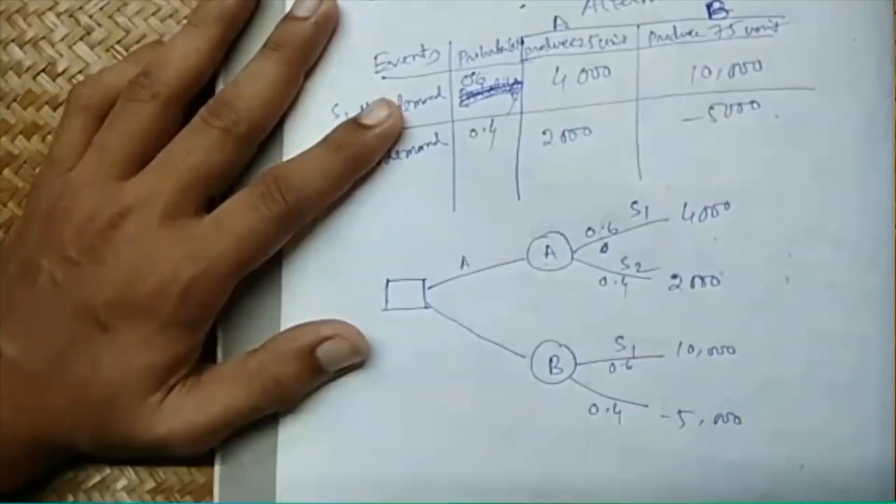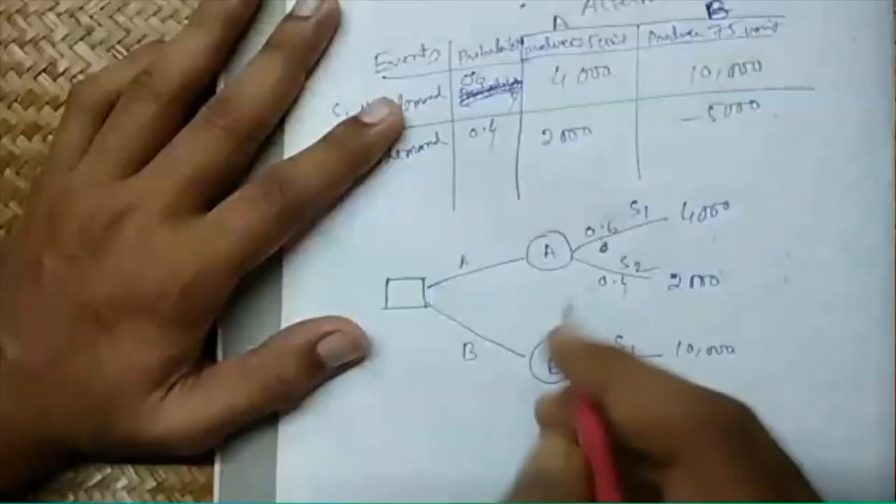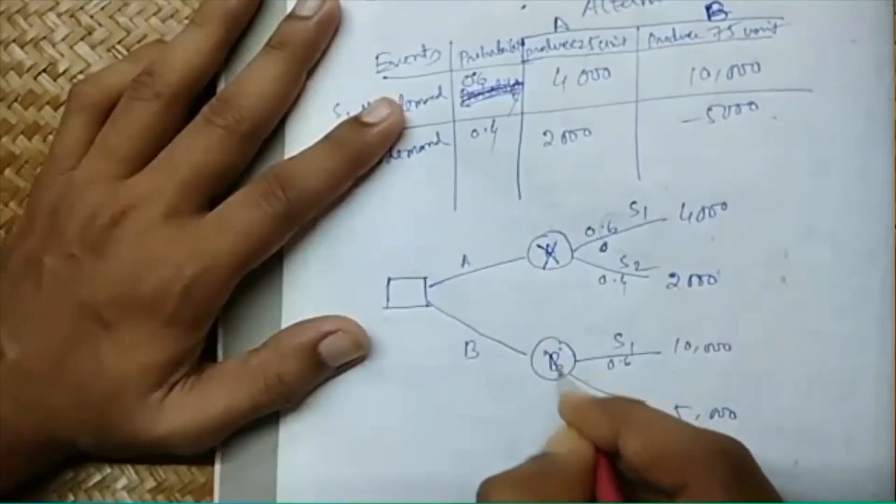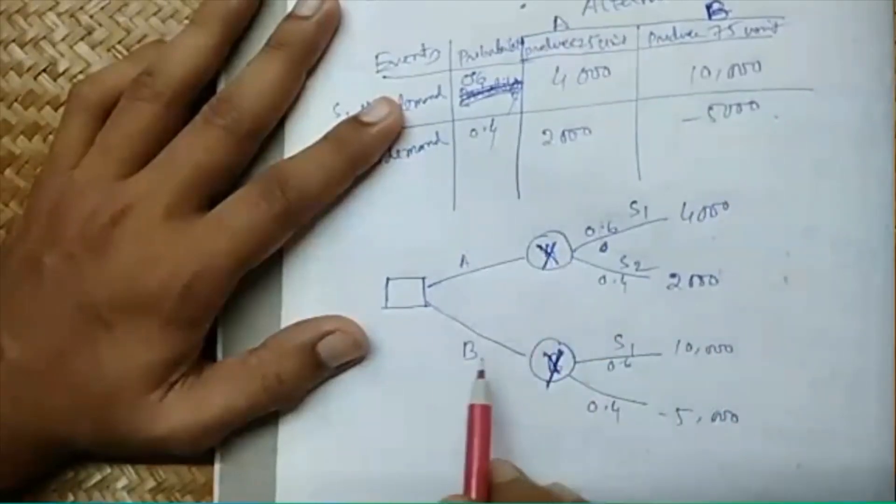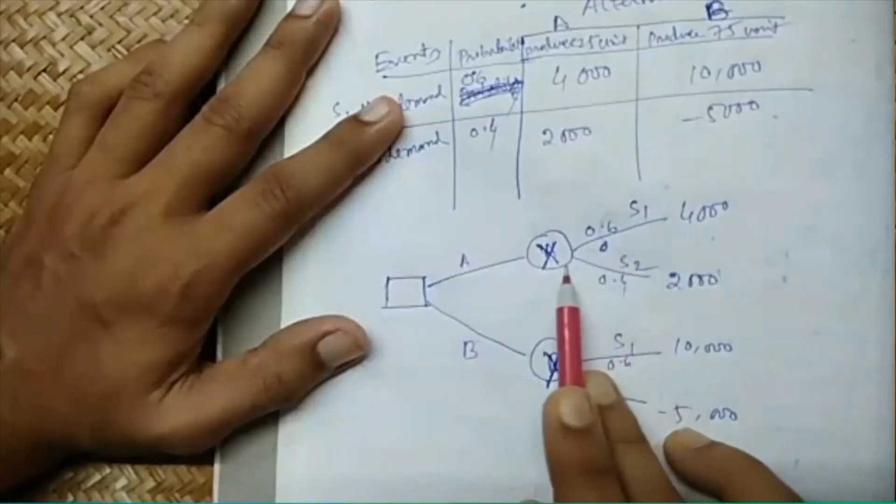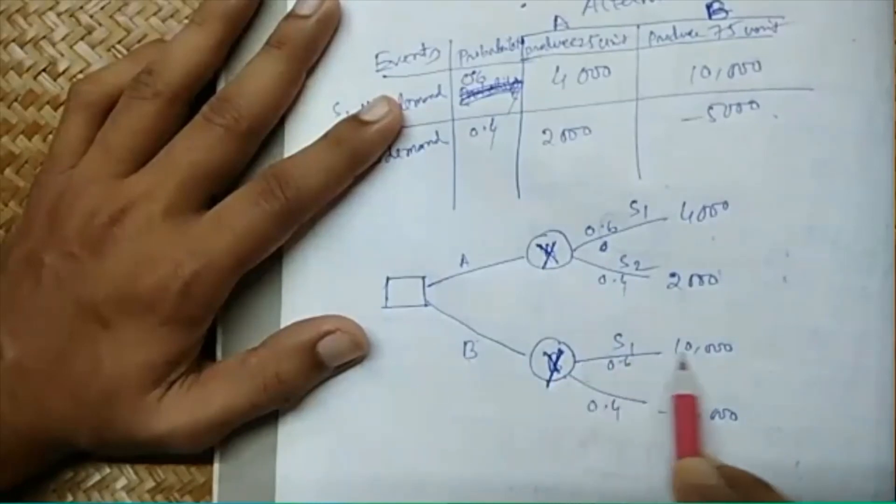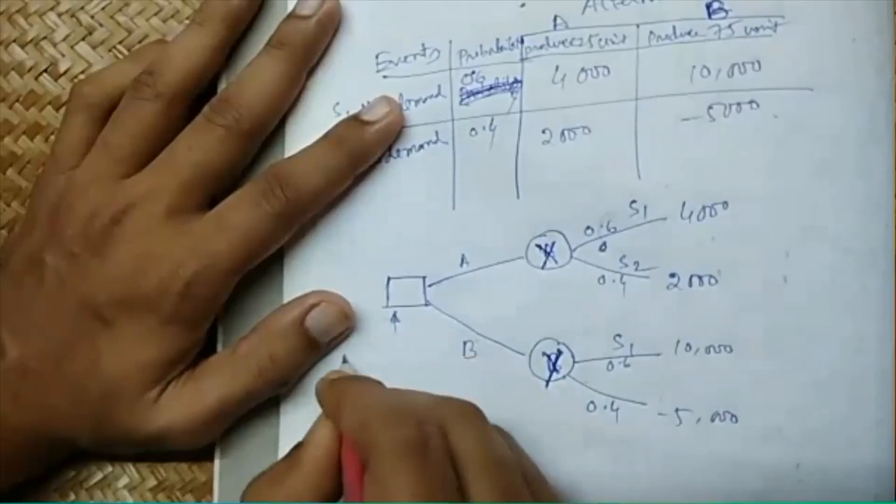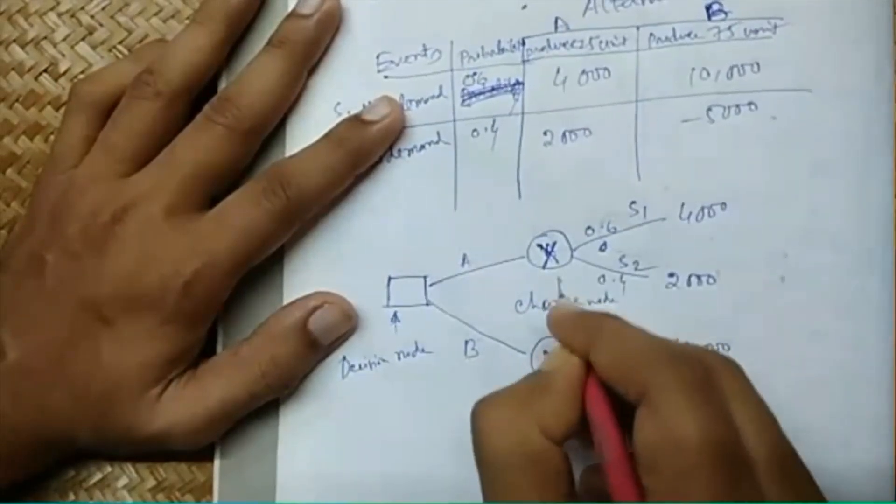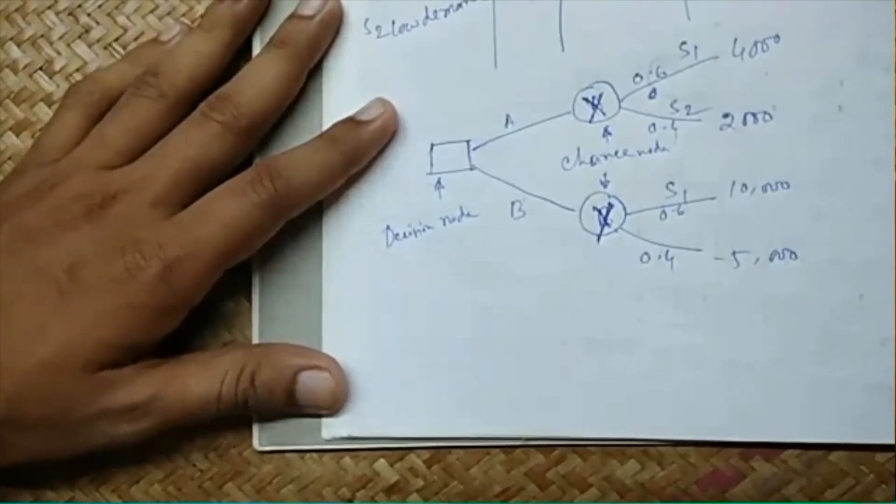Here we will write out the probabilities: it has 0.6 probability, it has 0.4 probability. Again it has 0.6, it has 0.4 probabilities. This is decision node, these are chance nodes. We have to take a decision either A or B. If we take A this event X occurs. X can be this or can be this. And Y, if we take decision B this occurs, which effects either this or this. This is called decision node and these are called chance or event node.